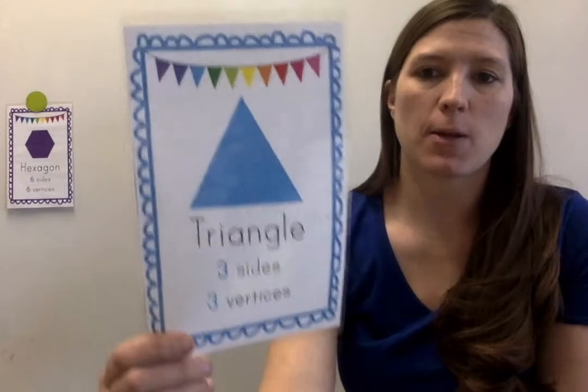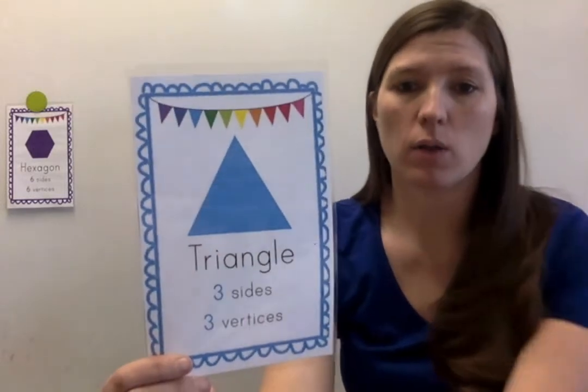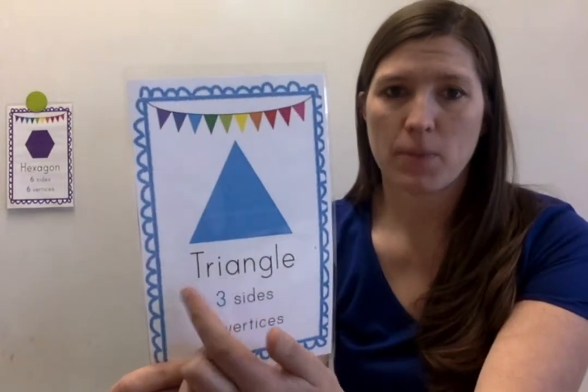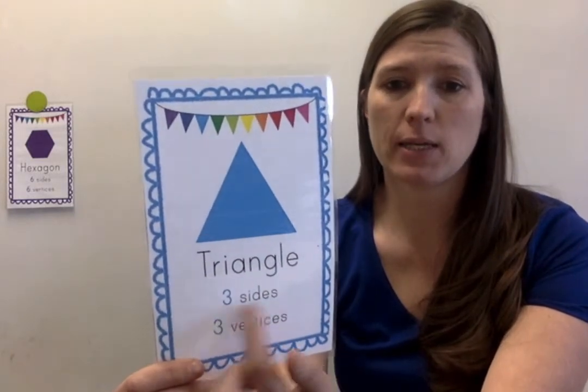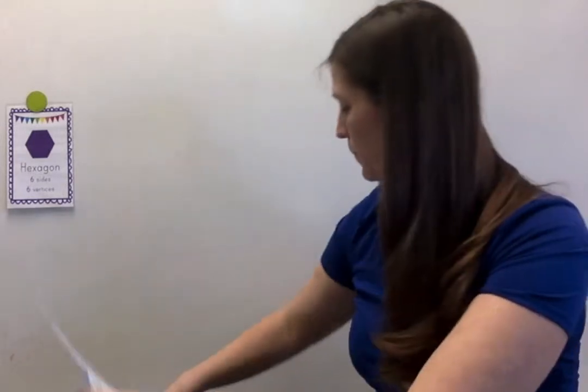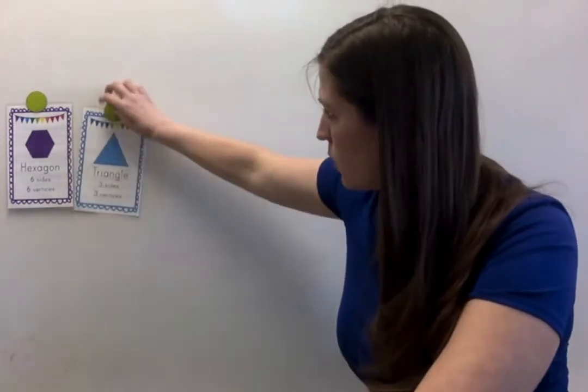All right, what shape is this? Triangle. What does tri mean? Tri means 3. So triangle has 3 sides and 3 vertices. The vertices are the corners. It's our triangle.